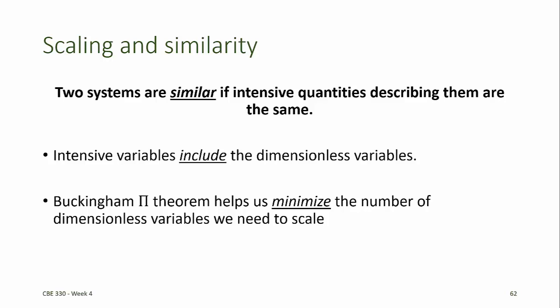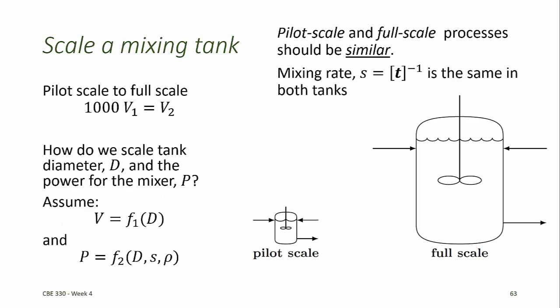The Buckingham Pi theorem helps us to minimize the number of dimensionless variables needed to describe a process, so we can use these dimensionless variables for scaling. Consider an example of a mixing tank where we have a pilot scale and we know how it is designed and how it behaves, and we want to scale it to a much larger scale with 1,000 times the volume of the pilot scale. We'll use subscript 2 for the full scale and subscript 1 for the pilot scale. How do we scale the tank diameter and the power for the mixer?